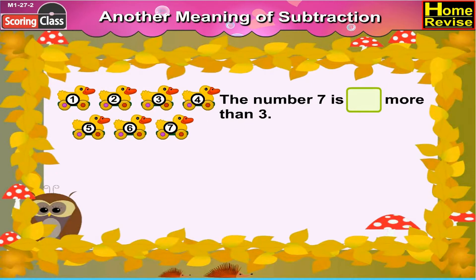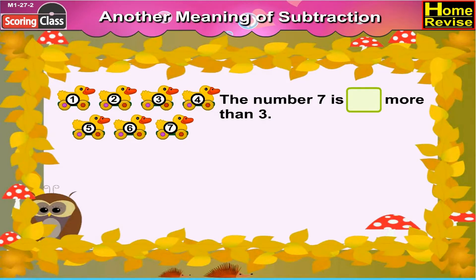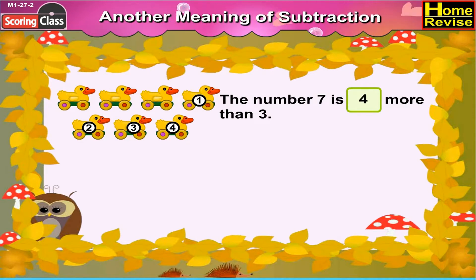Now, the number 7 is blank more than 3. Is the number 7 bigger or smaller than 3? You are right, it is bigger than 3. Now, 7 is bigger than 3 by how many? Correct, by 4. So the number 7 is 4 more than 3.